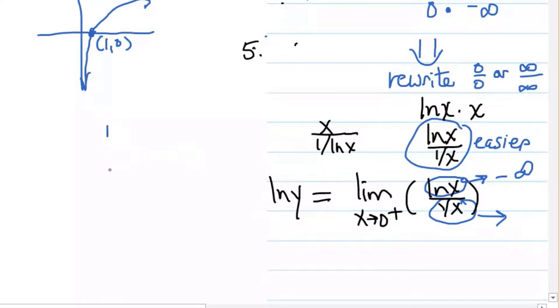And if you want to visualize the graph, that's one way to think about it. Remember the graph of y equals one over x? So the limit coming in from the right towards zero would be positive infinity. So now we know we have an infinity over infinity form. You can use L'Hôpital's rule.